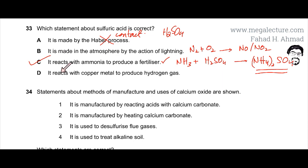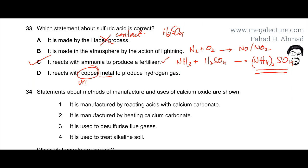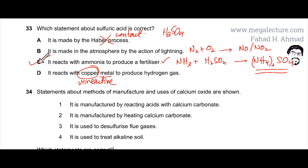The last option states it reacts with copper to produce hydrogen gas. While metals can react with acids like sulfuric acid to produce hydrogen gas, the problem with copper is that it is extremely unreactive, so it's not going to lead to any significant reaction. So this reaction would probably not happen, and option C remains correct.